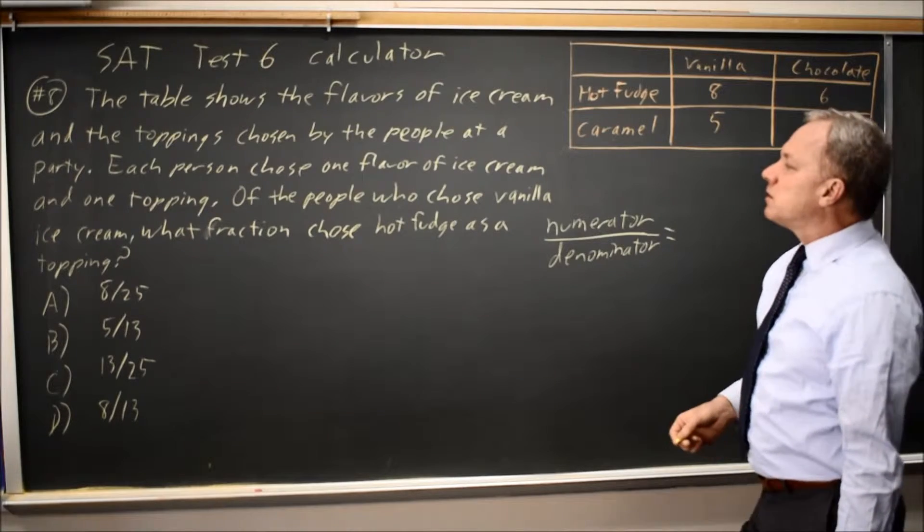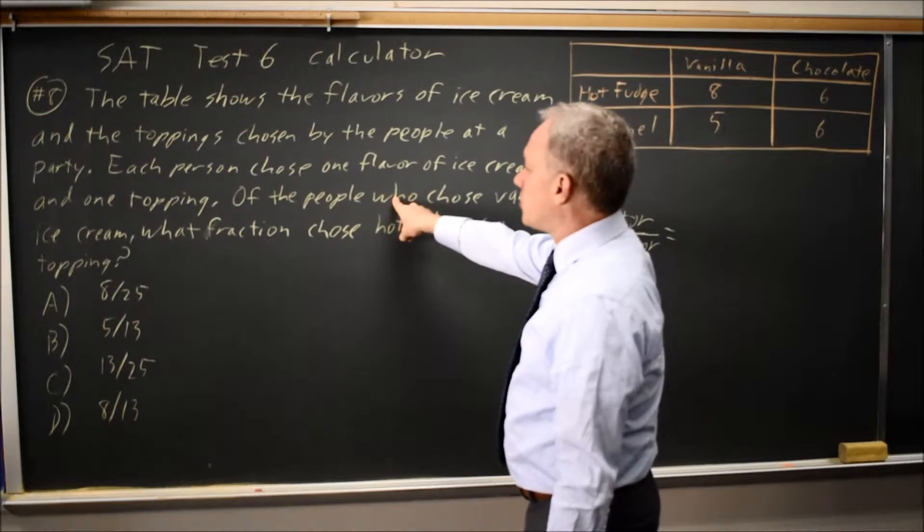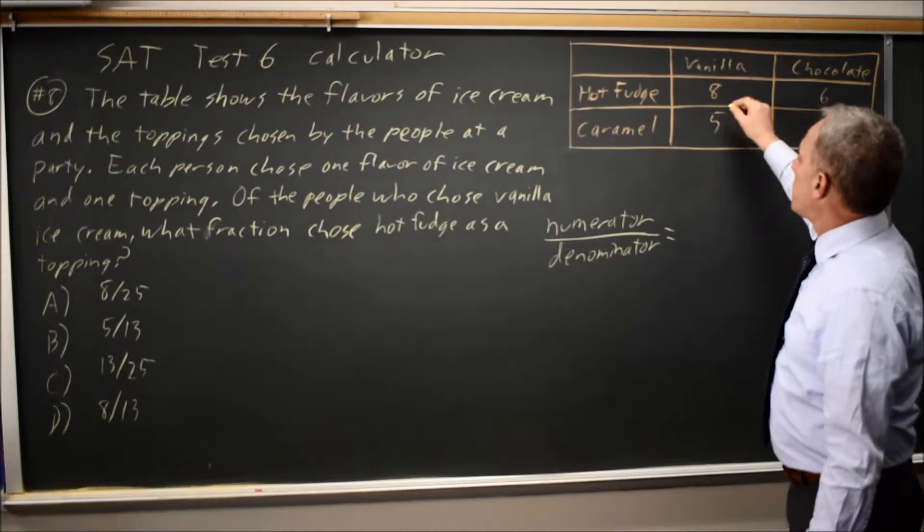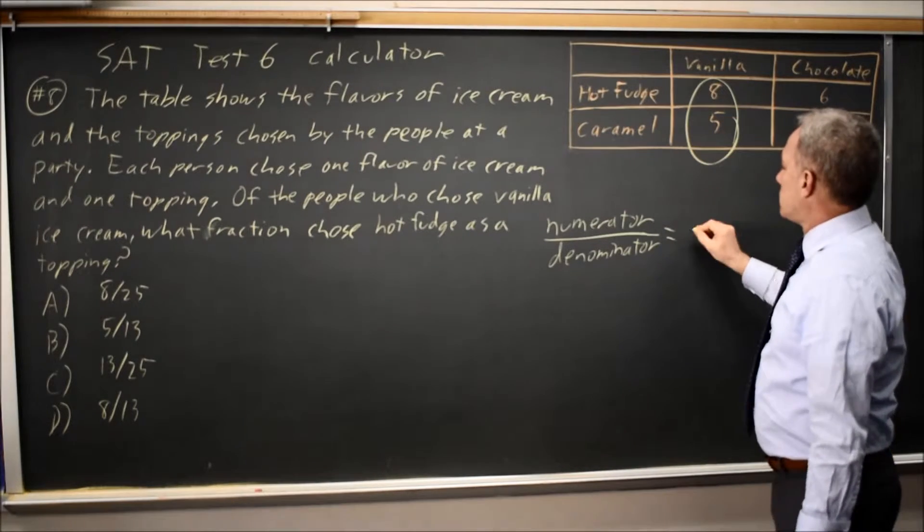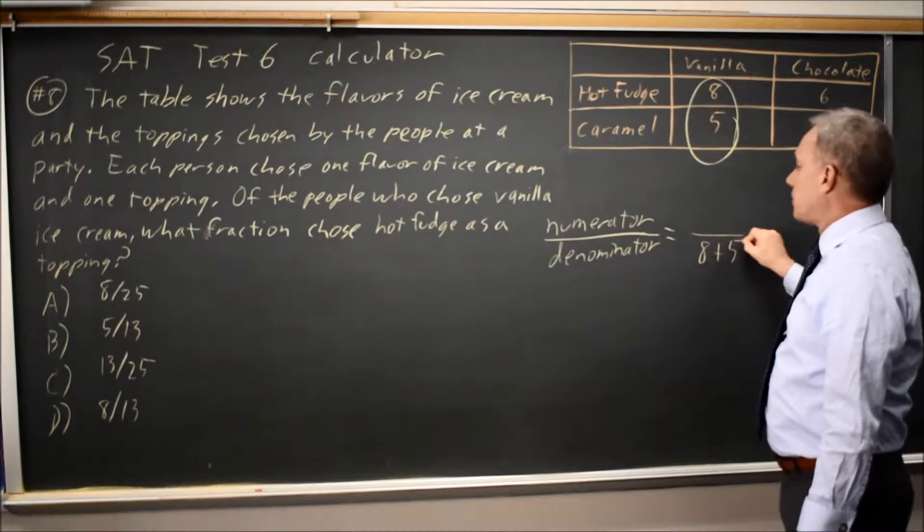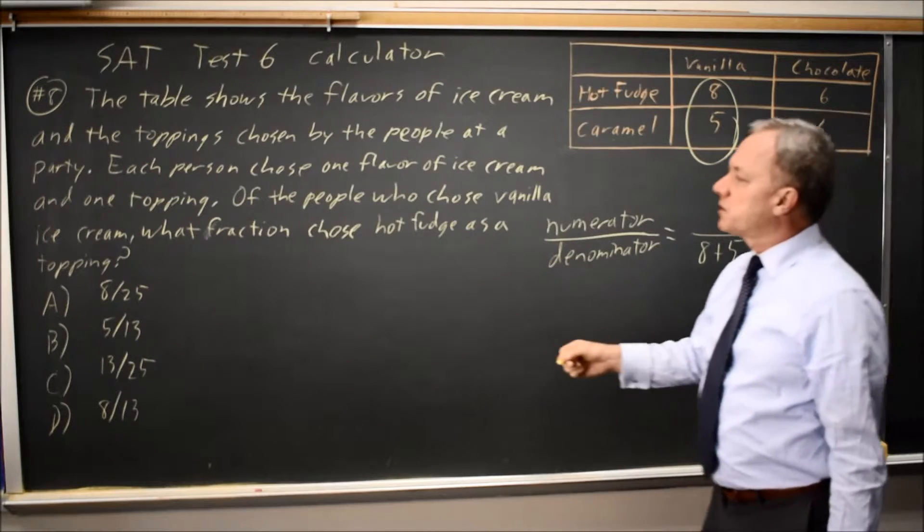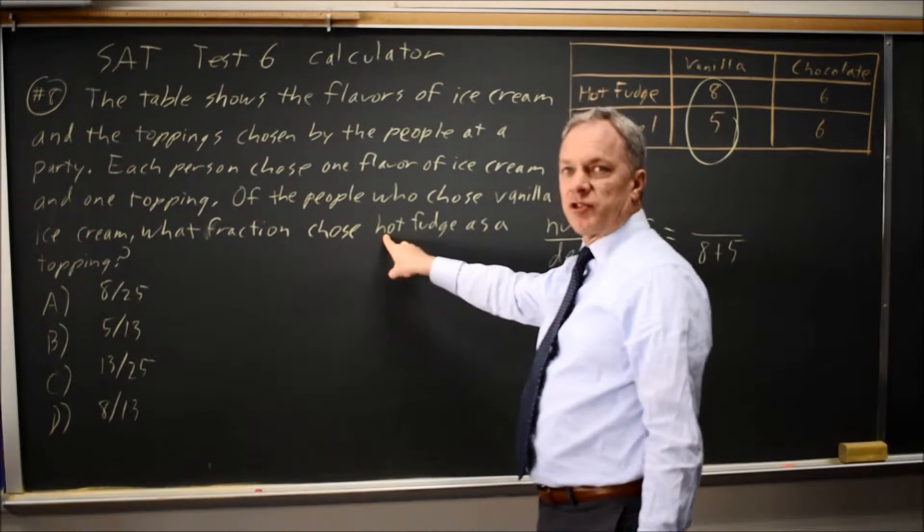So in this case, the question says, of the people who chose vanilla ice cream, so our denominator is all people who chose vanilla, which would be 8 plus 5. And then the question is, of those people, what fraction chose hot fudge?